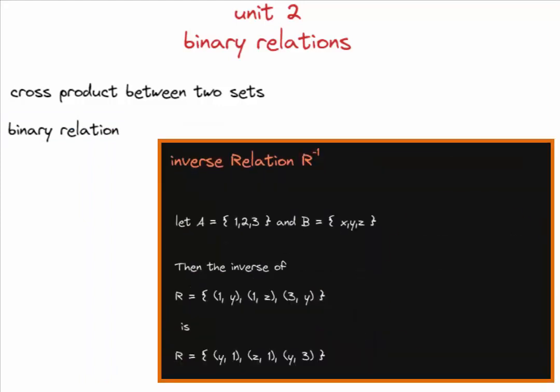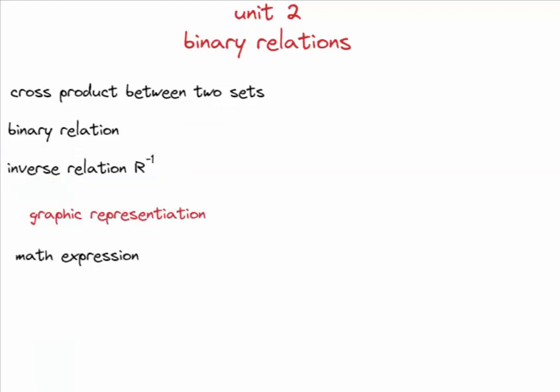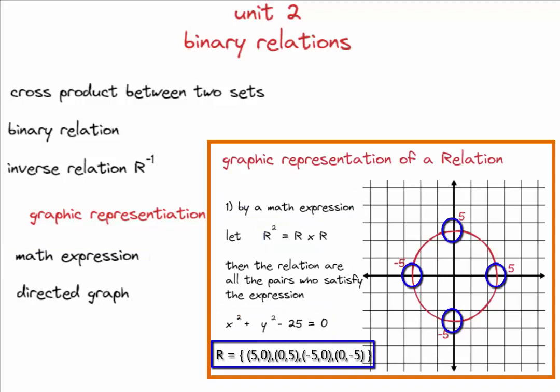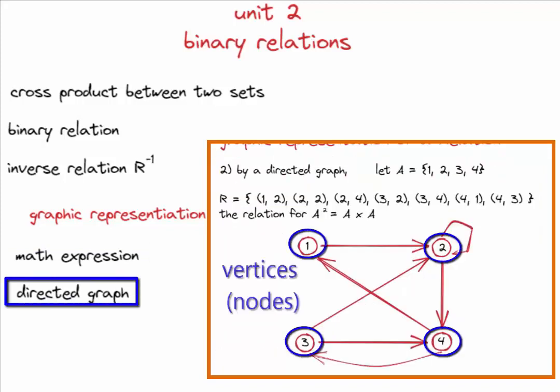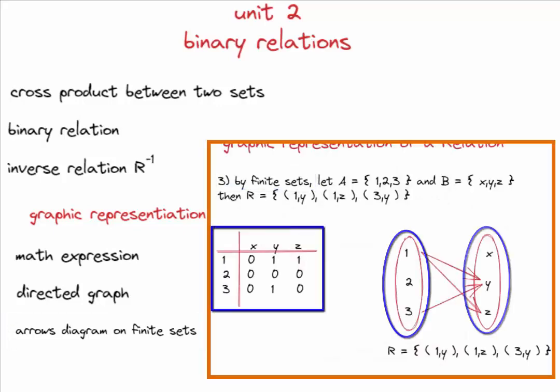By swapping its components, we learn how to get an inverse relation. There are multiple options to graphically express a relation, like a matrix expression in a diagram, or like a directed graph with vertices and edges. Also, we can express it with arrows diagram on finite sets.